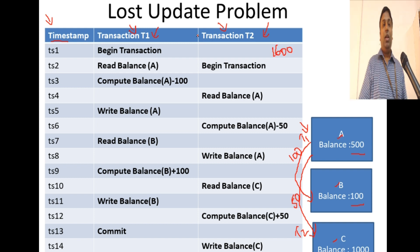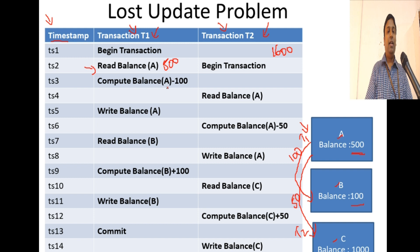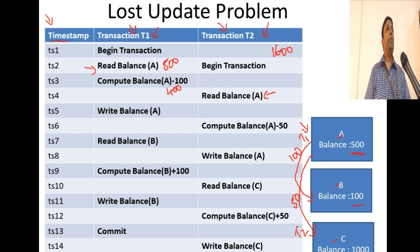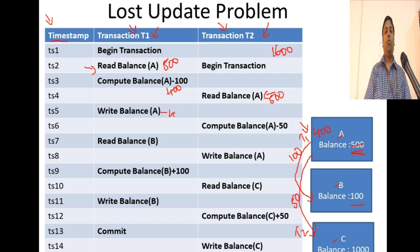We will start the transactions. T1 reads balance of A, which is 500, reading it from the buffer in main memory. It performs 500 minus 100, which is 400. Simultaneously, T2 also kicks in and reads balance of A from the buffer. Since this data is already in the buffer, it reads the value 500. Then T1 writes balance of A — it changes the value in the buffer to 400.